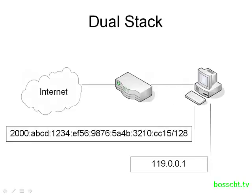So here, our host has an IPv6 address and an IPv4 address, and the router is going to have the same thing. This is called the dual stack approach because you're running both protocol stacks — the IPv4 stack and the version 6 stack. That's the first method.